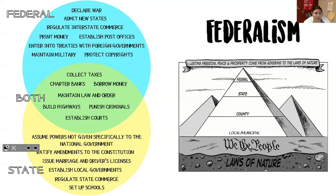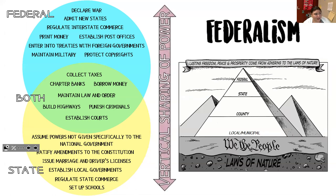Federalism is a partnership between the state, the local government, and the national government. In the end, the federal government has full power. Take a look at the pyramid on the side — the United States is on top, which means they have last say. The state government, like Texas, would be below the federal government. The state can do particular things that pertain to them, as you see in the Venn diagram.